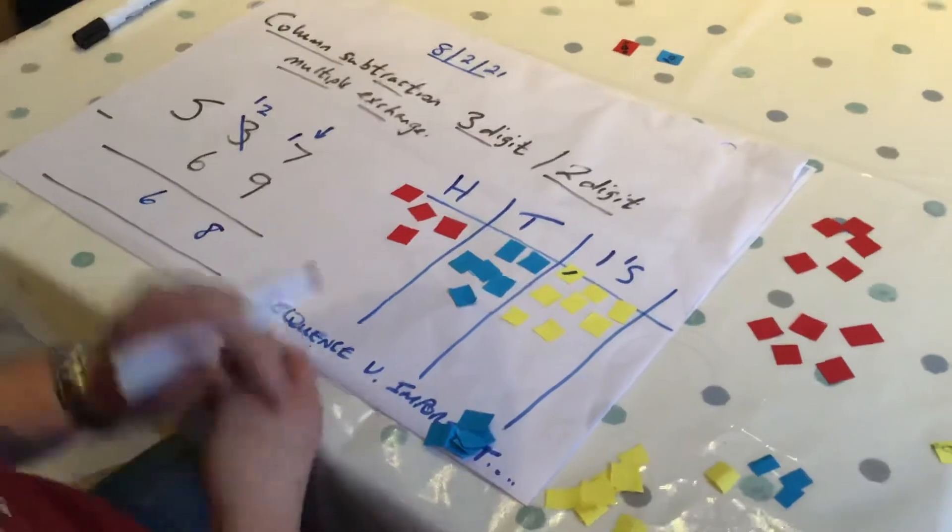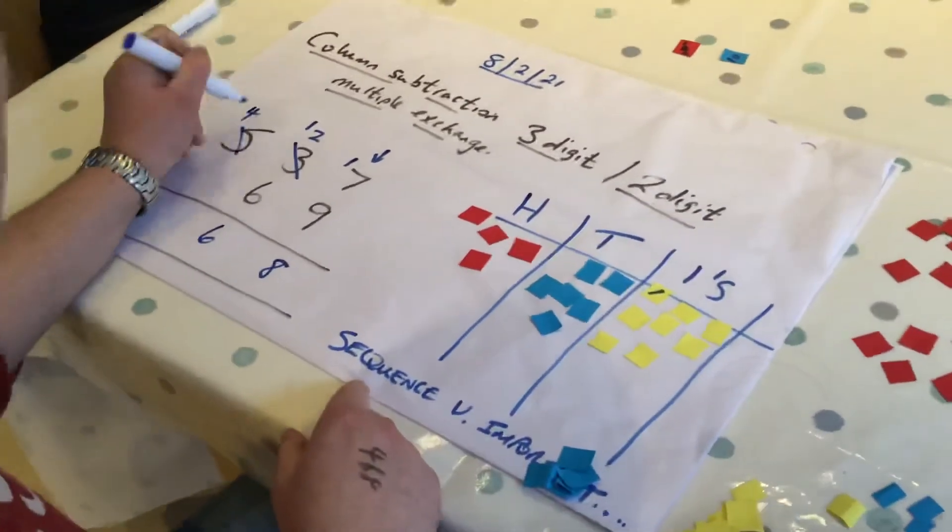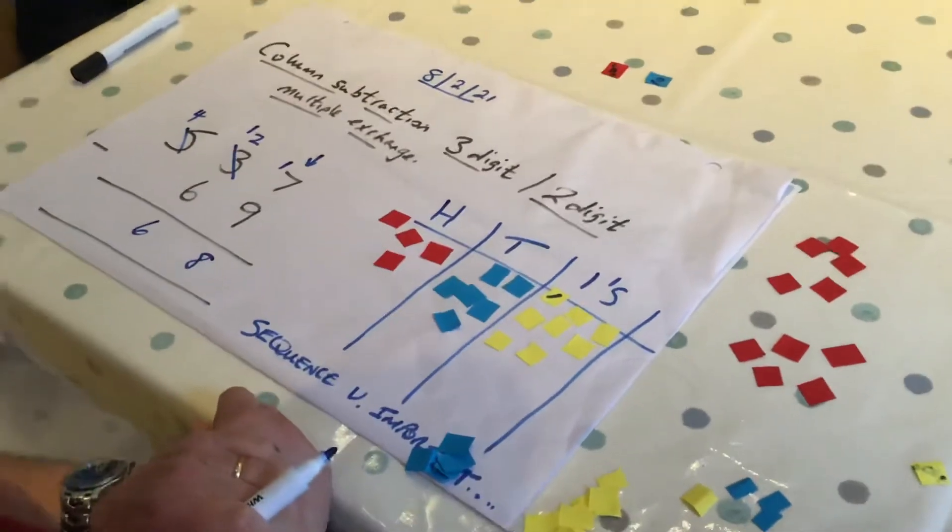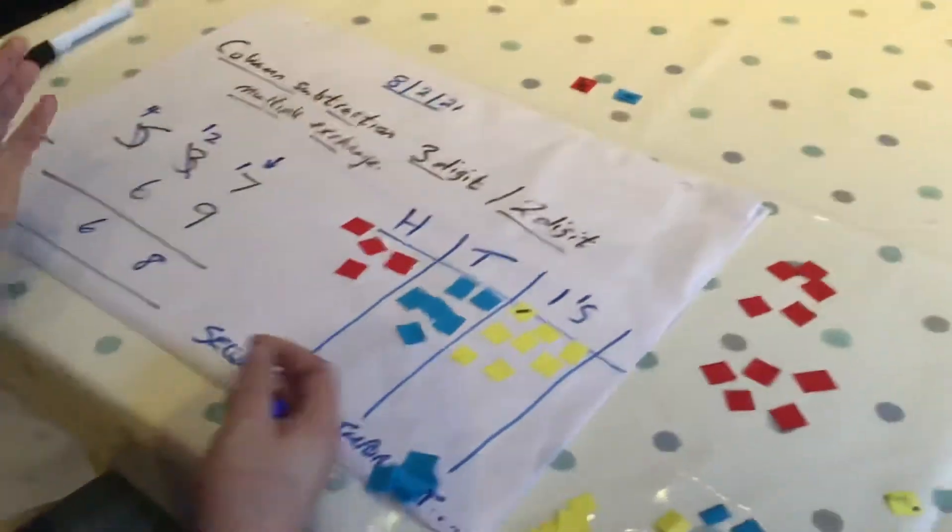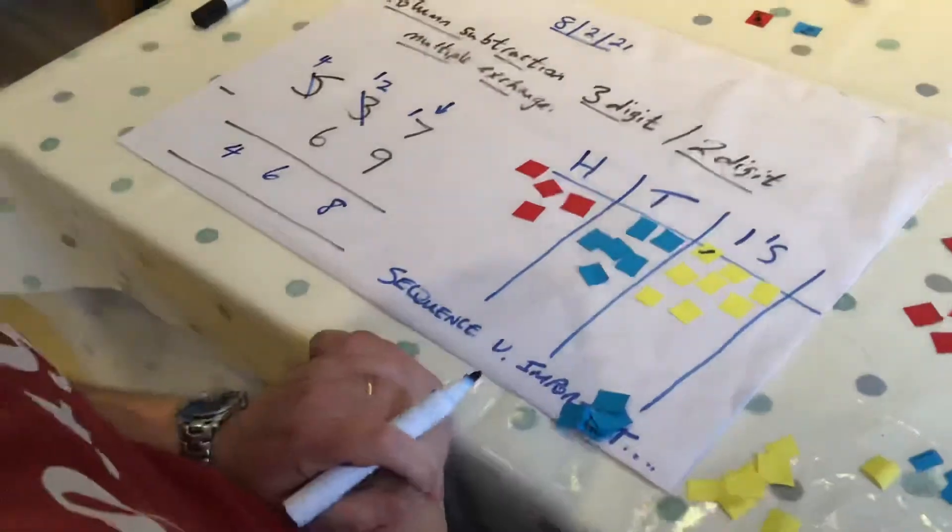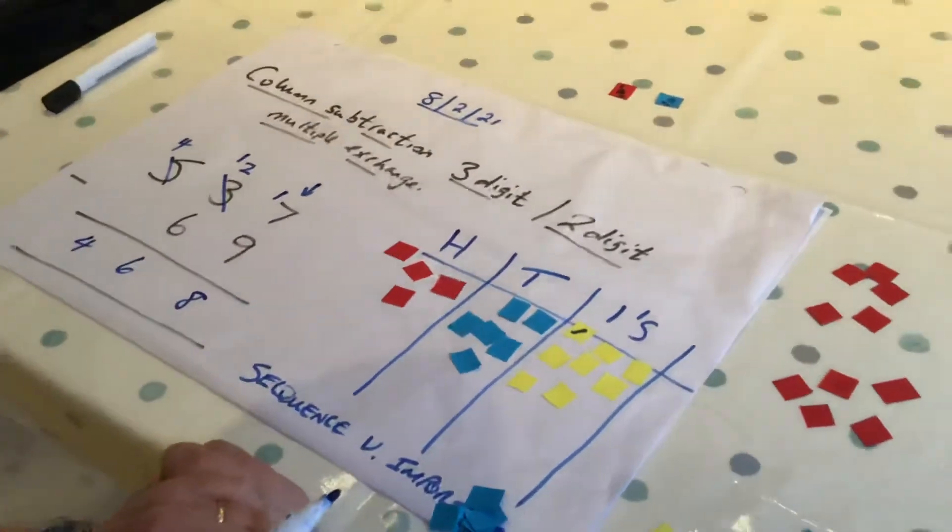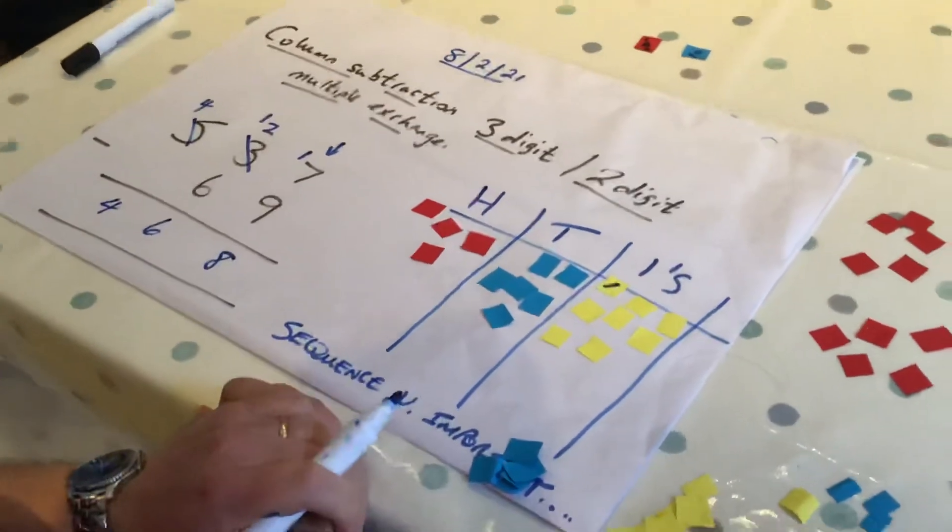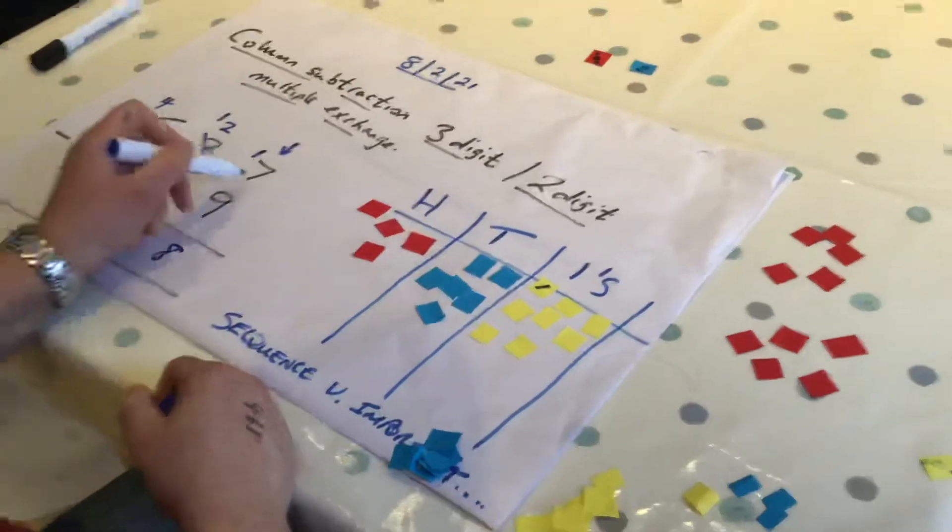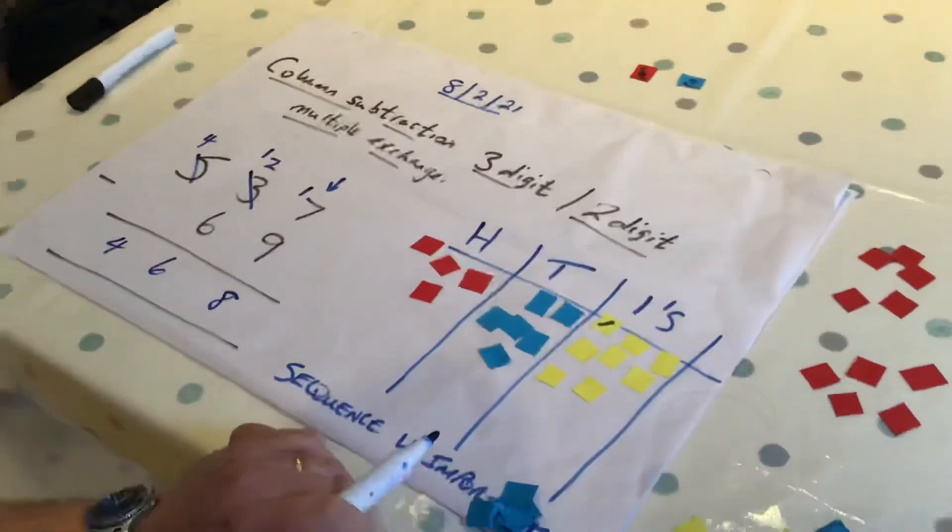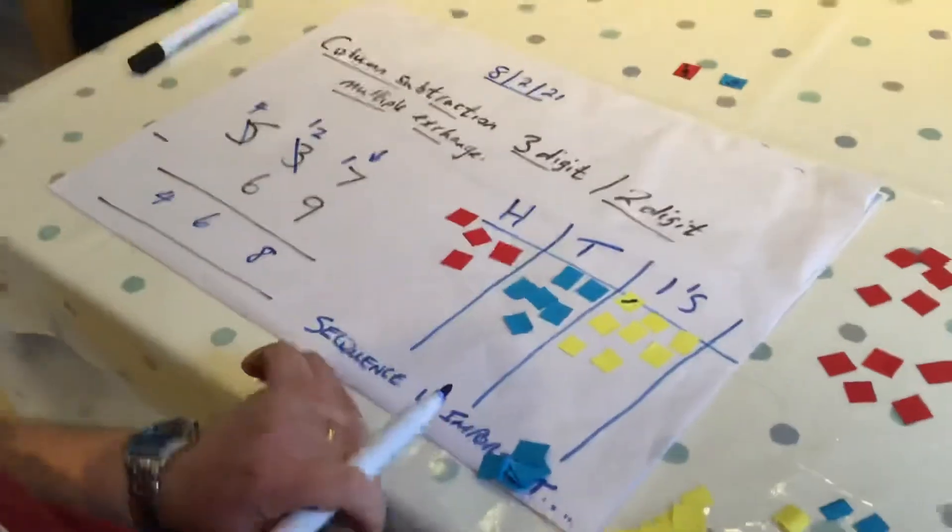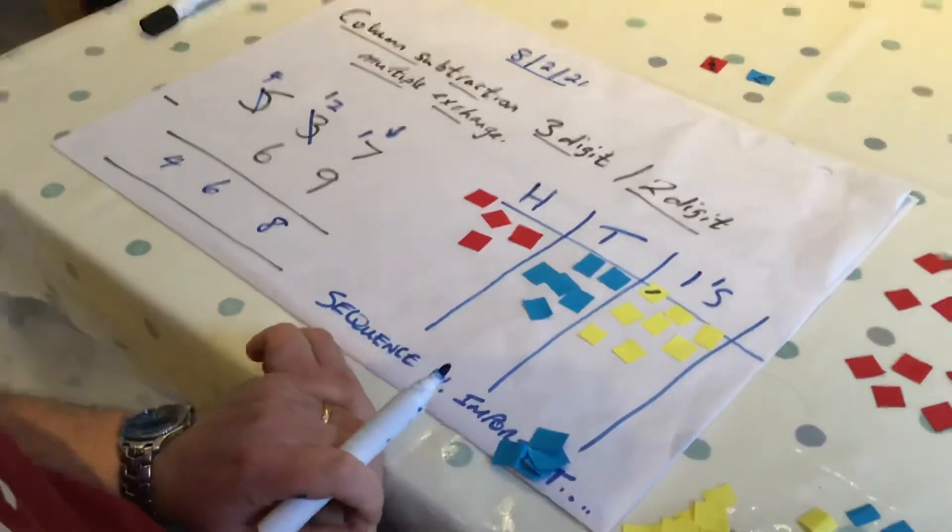Now, left with my hundreds. I should have shown you that exchange. I've only got 400 left in my hundreds column. I'm not taking away any hundreds, so I'm still left with 400. So the answer is 468. So that is an exchange with multiple exchanges. There were two exchanges. Initially, we went to the ones column by exchanging with our tens, and then we exchanged a hundred for ten tens. And that's how we do it. So best of luck with that.